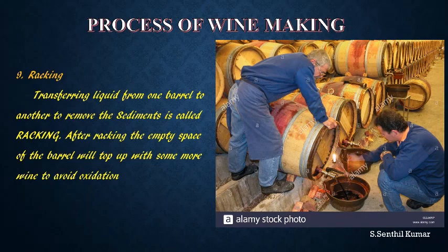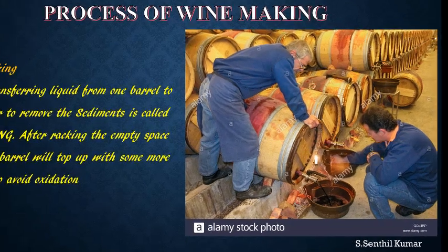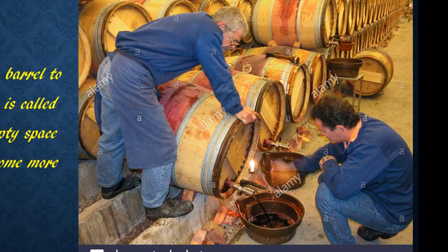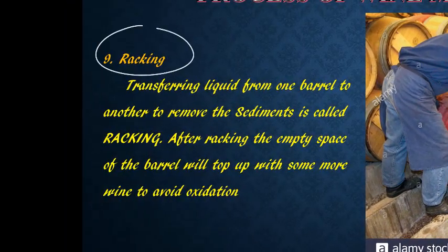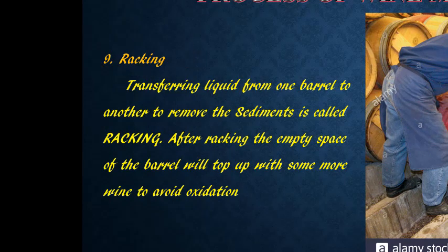Once the aging process is finished, the wine is transferred from one barrel to another to remove the sediments. This process is called racking. After racking, the empty space in the barrel is topped up with more wine to avoid oxidation.